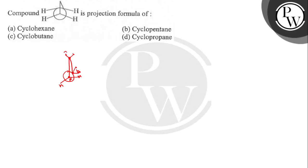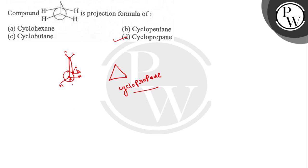So this compound contains three carbon atoms. We can say that this is cyclopropane — this is the structure of cyclopropane. So this compound is the projection formula of cyclopropane. Option D is the correct answer. Thank you.